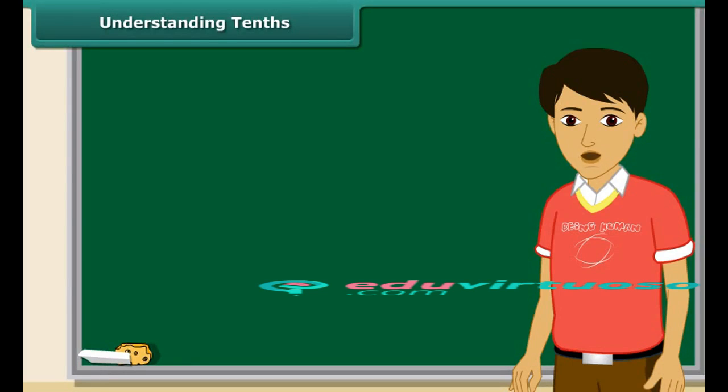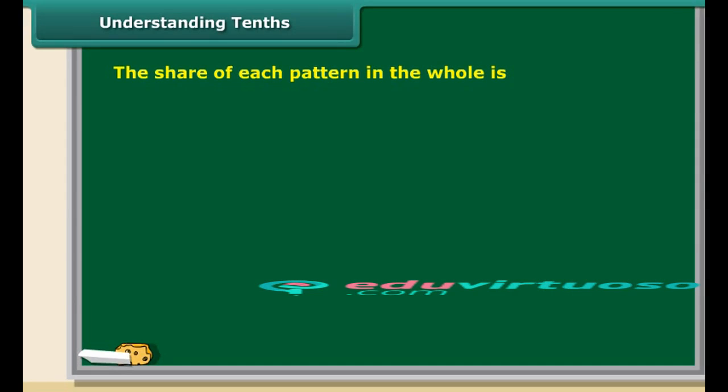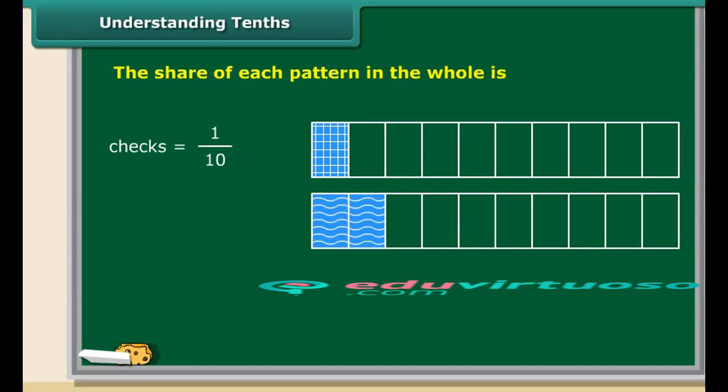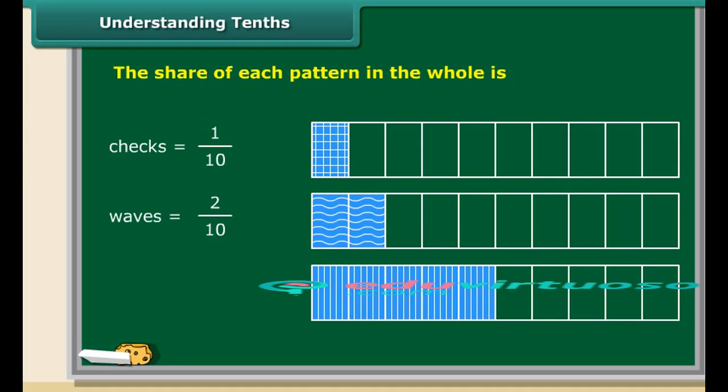Let us understand the concept of decimal using fractions with denominator 10. Consider the fraction bars. In the first bar, only 1 out of the 10 blocks has checks. In the second bar, only 2 out of the 10 blocks have waves. Similarly, in the third bar, 5 out of the 10 blocks have stripes. In all these cases, we express the share of the patterned blocks to the total blocks as a fraction with denominator 10. Such fractions are called tenths.